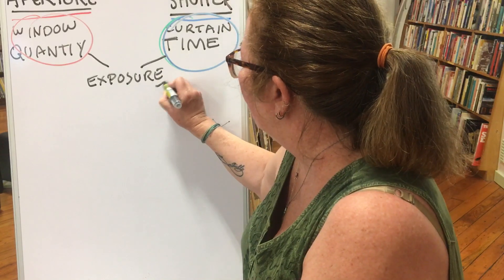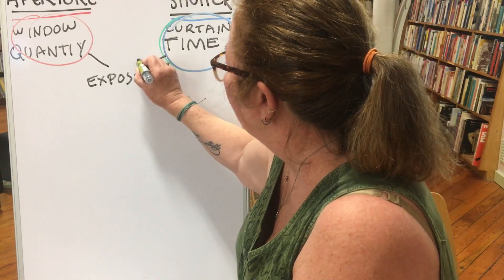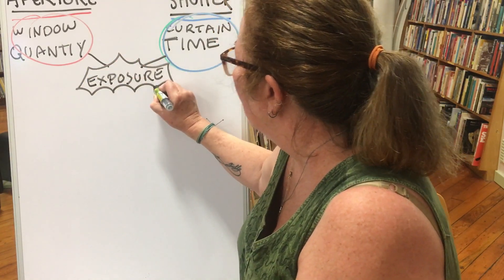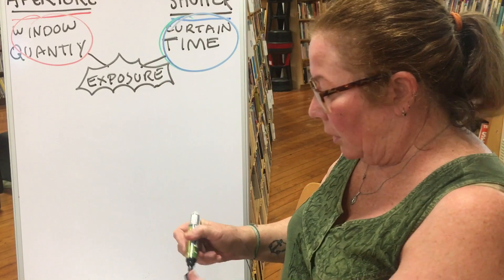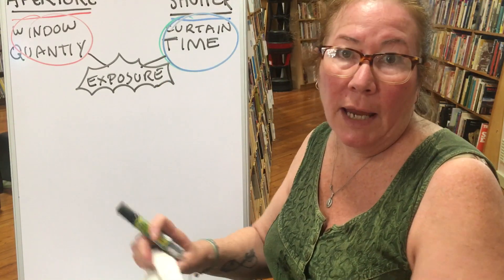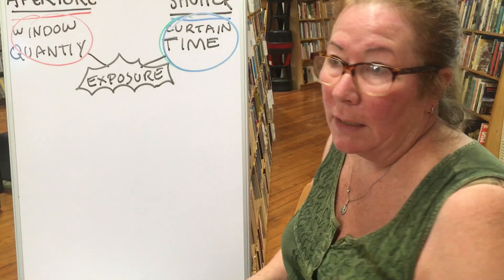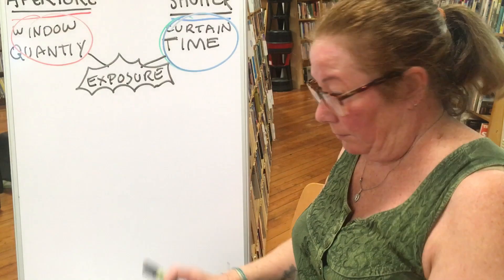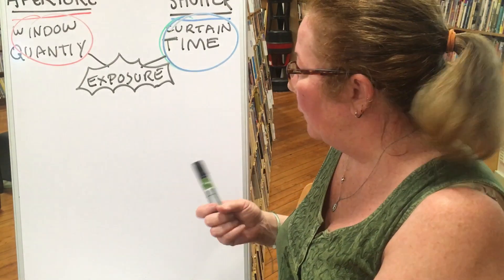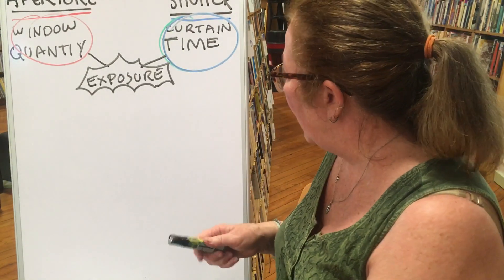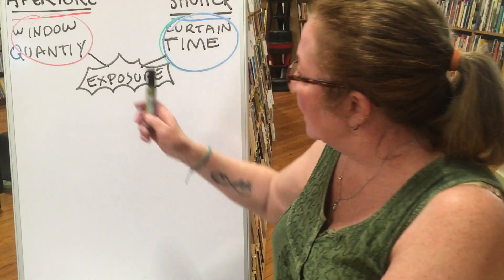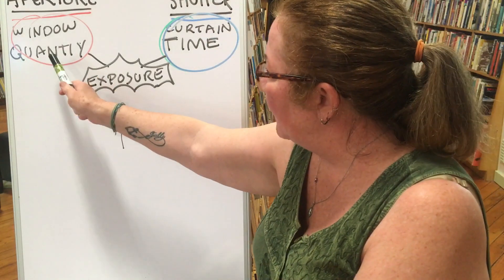An exposure is a photograph. Every single time you use your phone camera you're making an exposure. You actually have those same controls in your phone, but they're tiny ones. So the size of the aperture is represented by numbers.